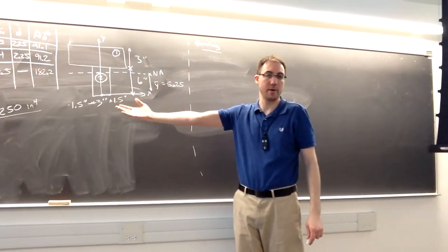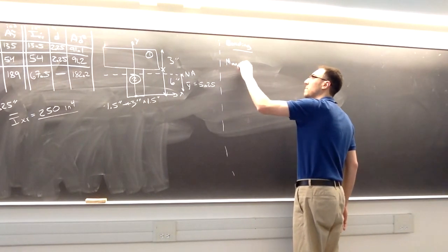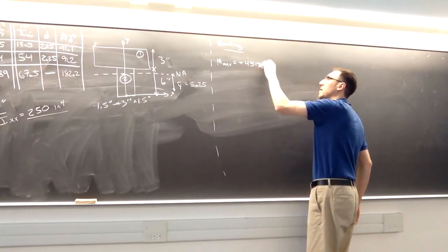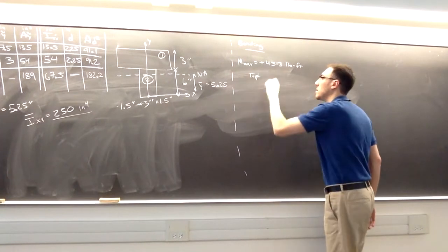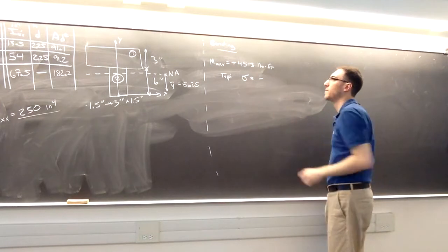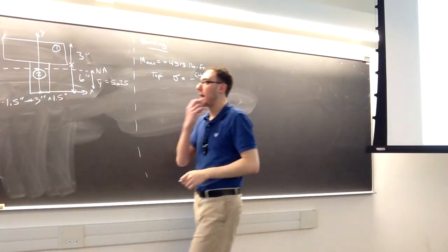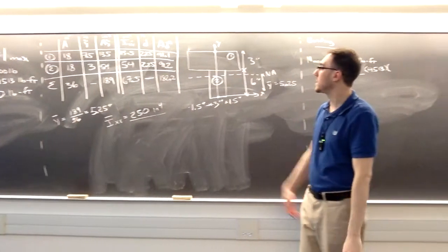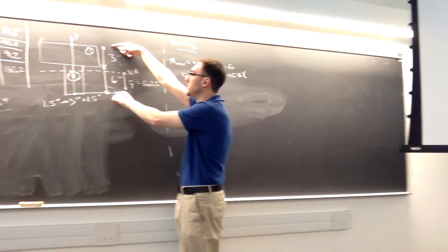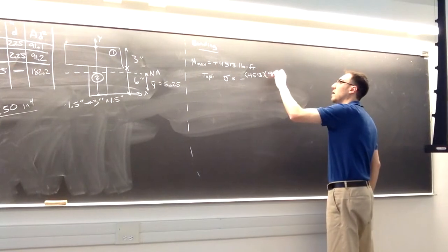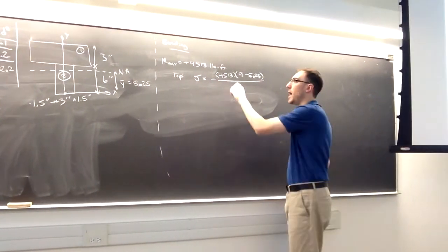Since one of the moment values is zero, I'll get zeros for that case, but the process is the same. Where M is maximum at 4,513 pound-feet, I first check at the top of the beam. The stress is M times y over I. At the top, the value of y is 9 inches minus 5.25, which is 3.75 inches. Dividing by I of 250 — but I need to convert units, so I multiply 4,513 pound-feet by 12 inches per foot to get pound-inches. The result at the top of the beam is negative 813 psi, meaning the top is in compression.